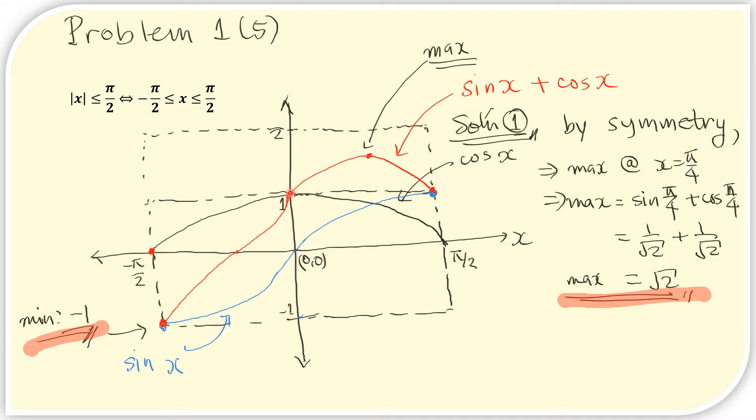For the sine curve, that is this blue graph. Again, we know this from trigonometry. It is 0 at 0 and it is minimum at the endpoint here at -1 and maximum at the endpoint here at 1.